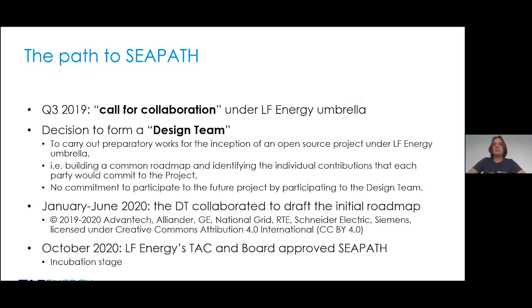This design team worked between January and June 2020, and it delivered the initial roadmap of an open source project. This work involved both end users and technology vendors. Advantech, Alliander, GE, National Grid, RTE, and Schneider Electric participated in these works. The resulting roadmap has been released under a Creative Commons Attribution license.